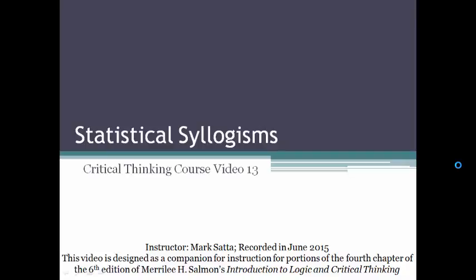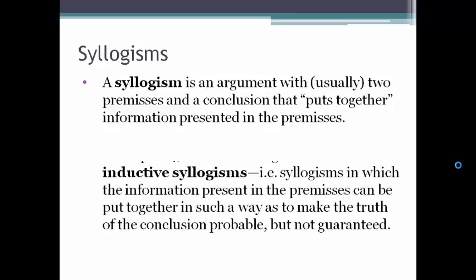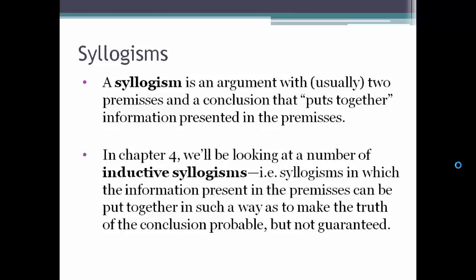In Chapter 4, we'll be looking at a variety of different types of inductive arguments, the first of which is the statistical syllogism. A syllogism is an argument with usually two premises and a conclusion that puts together information presented in the premises. We'll be looking at inductive syllogisms in which the information in the premises can be put together to make the truth of the conclusion probable, but not guaranteed.